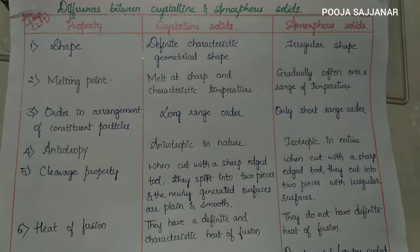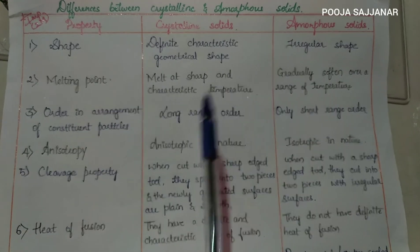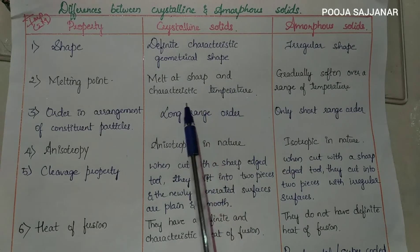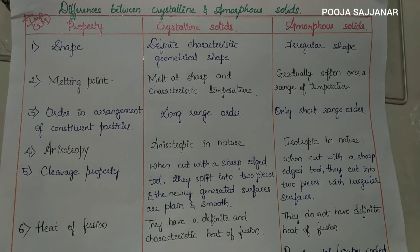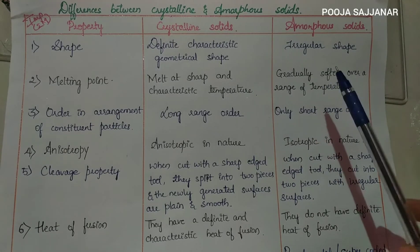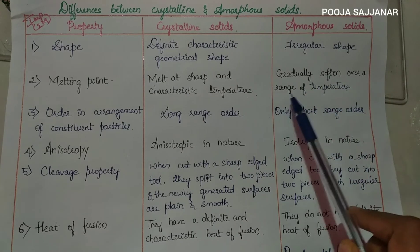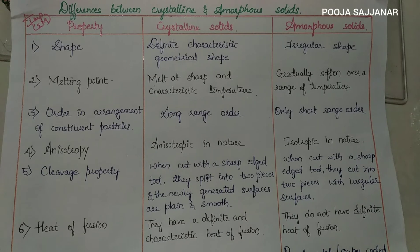The second property is melting point. Crystalline solids melt at a sharp and characteristic temperature — meaning exactly at a particular temperature. For example, a substance melting at 900 degrees Celsius will melt exactly at 900 degrees Celsius. But amorphous solids are gradually softened over a range of temperature — for example, between 900 to 910 degrees Celsius. They melt over a range and don't have an exact melting point.